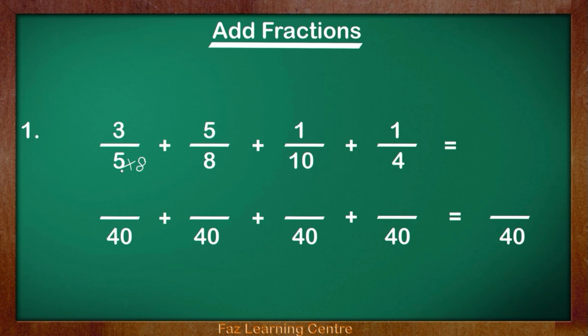If you do something to the denominator, so here we are making the denominator 8 times bigger, we have to do the same to the top denominator. So 3 times 8 equals 24.